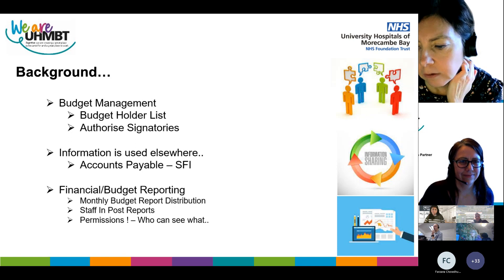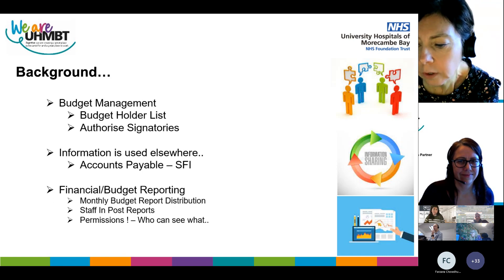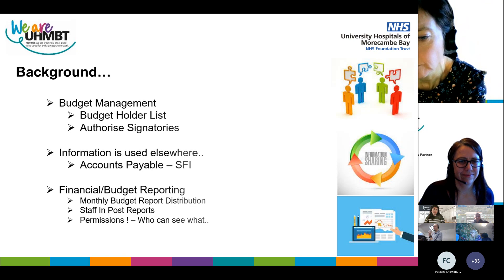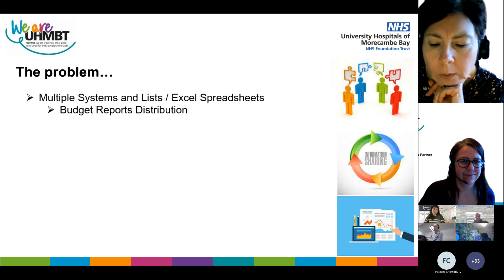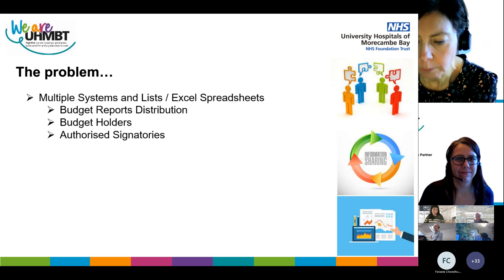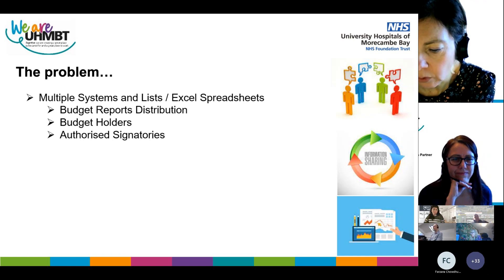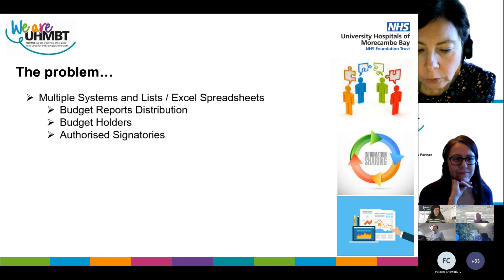This ensures that only approved staff are authorising expenditure from the relevant budget codes. In addition, an accurate list is necessary to ensure that the right staff receive monthly budget reports and their staff-in-post reports, and can only access those reports that are relevant to them. So the problem we had was we had multiple places where we were capturing the data — a data set of staff who should be receiving online reports, and Excel sheets listing authorised signatories, which had to be maintained for changes in staff such as leavers, new starters, and staff changing roles within the Trust, but also for changes in approval levels as per our SFIs.